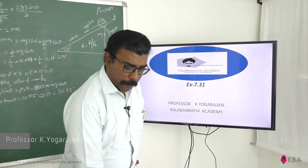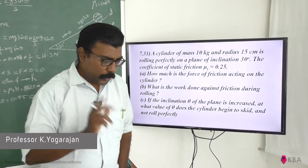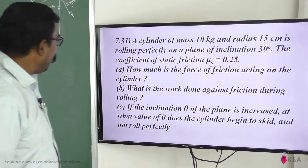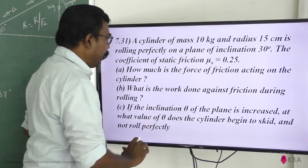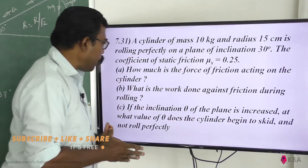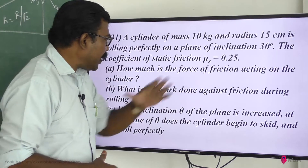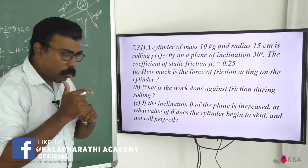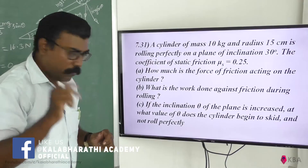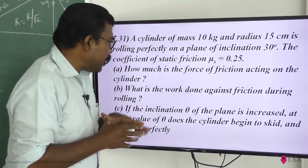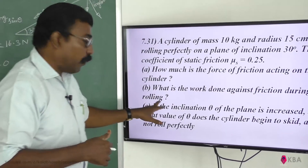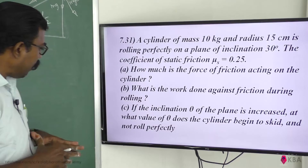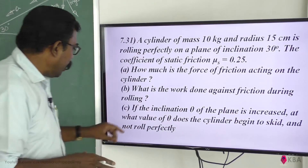I am going to show you a fantastic problem. We have a cylinder of mass 10 kg and radius 15 cm rolling perfectly on a plane of inclination 30 degrees. The coefficient of static friction μs is equal to 0.25. The first question is: how much is the force of friction acting on the cylinder? The second question is: if the inclination theta is increased, at what value of theta does the cylinder begin to skid and not roll perfectly?